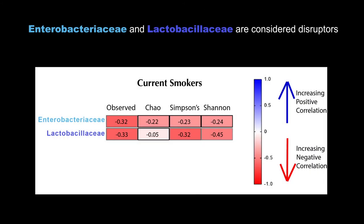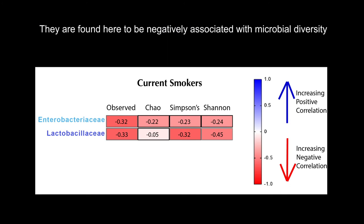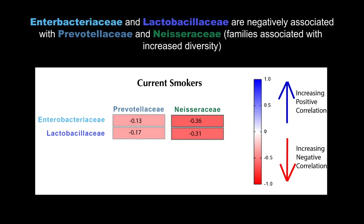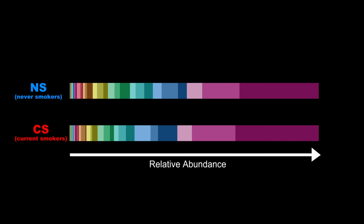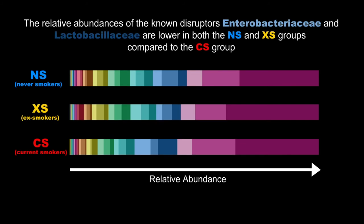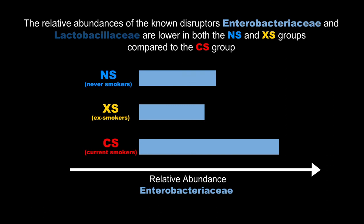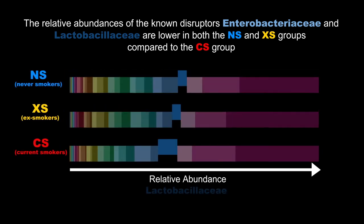Enterobacteriaceae and Lactobacillaceae are considered disruptors; they are found here to be negatively associated with microbial diversity. Enterobacteriaceae and Lactobacillaceae are negatively associated with Prevotellaceae and Neisseriaceae, the families associated with increased diversity. The relative abundances of Enterobacteriaceae and Lactobacillaceae are lower in the NS group than in the CS group, and lower in both the NS and ex-smoker groups when compared to the CS group.